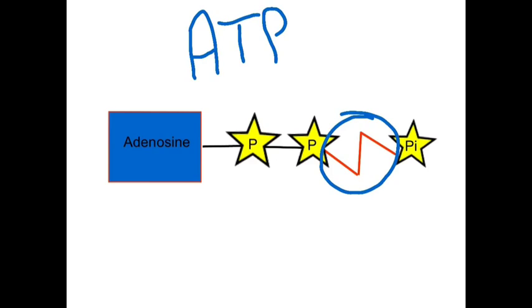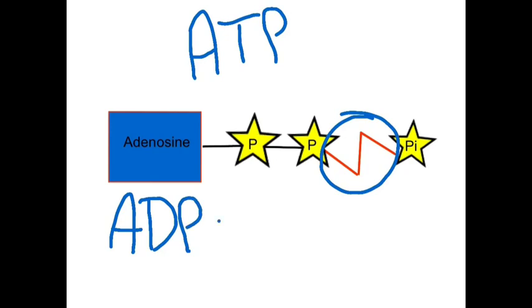Energy is released when ATP is broken down, and energy is required to resynthesize it. The breakdown of ATP releases adenosine diphosphate (ADP), a phosphate molecule, and energy.